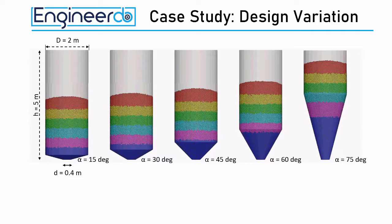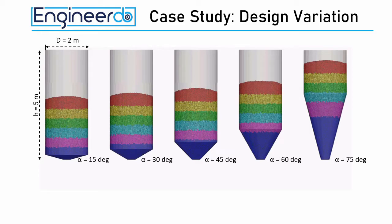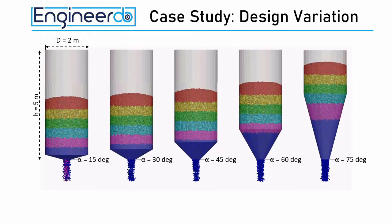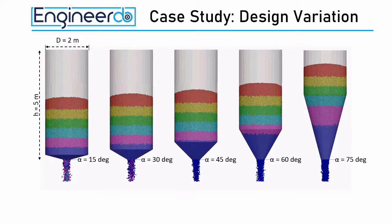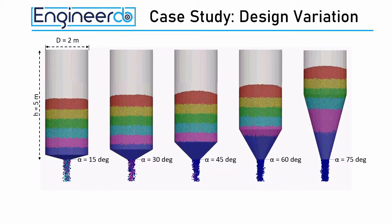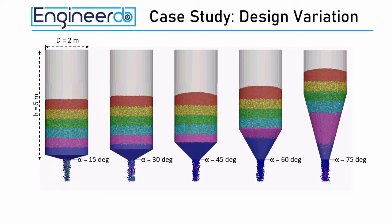Now let's take a look to the discharge process. When we are focusing on the material stream at the outlet, we can see that the level of mixing of different particle layers is changing from the left side to the right side.